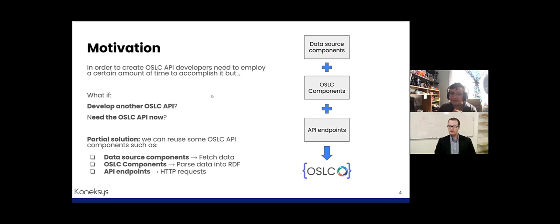Developers will need to employ a certain amount of time and effort to accomplish the creation of an OSLC API that manages REST resources. However, they could encounter different situations: what if they need to develop another OSLC API for another product? What if they need the OSLC API right now? What if they don't have enough time to run tests to check the correct mapping of these resources?